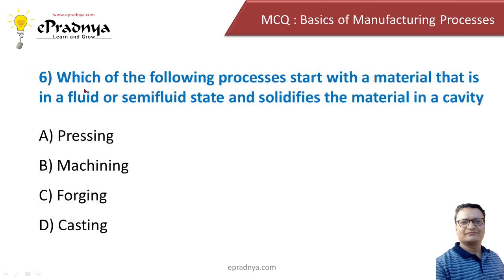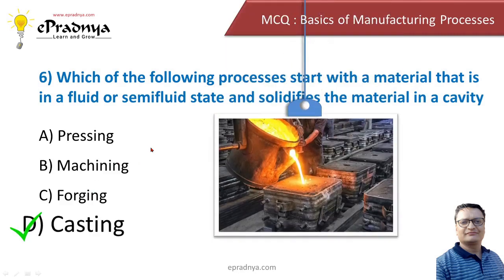Next question: which of the following processes starts with a material in a fluid or semi-fluid state and solidifies it in a cavity? Options: pressing, machining, forging, and casting. The correct answer is casting. In casting, material is heated until it becomes liquid metal — in a fluid or semi-fluid state — and is poured into a cavity where it takes the shape of the cavity to produce the final product.